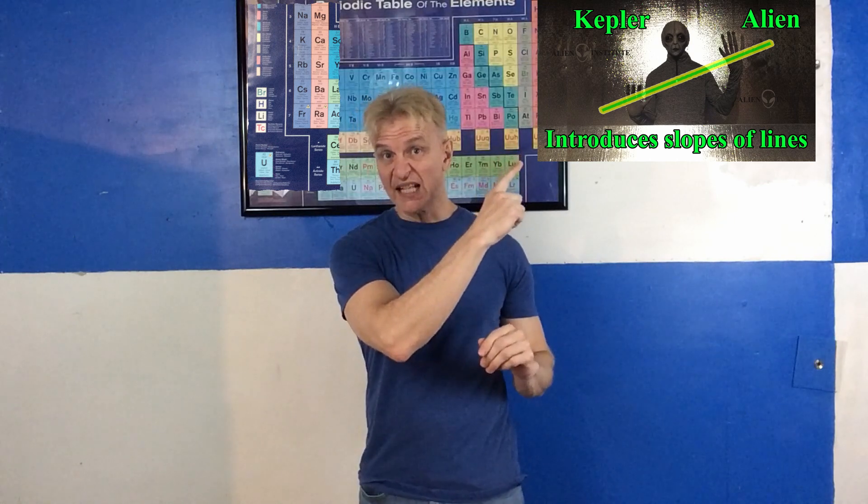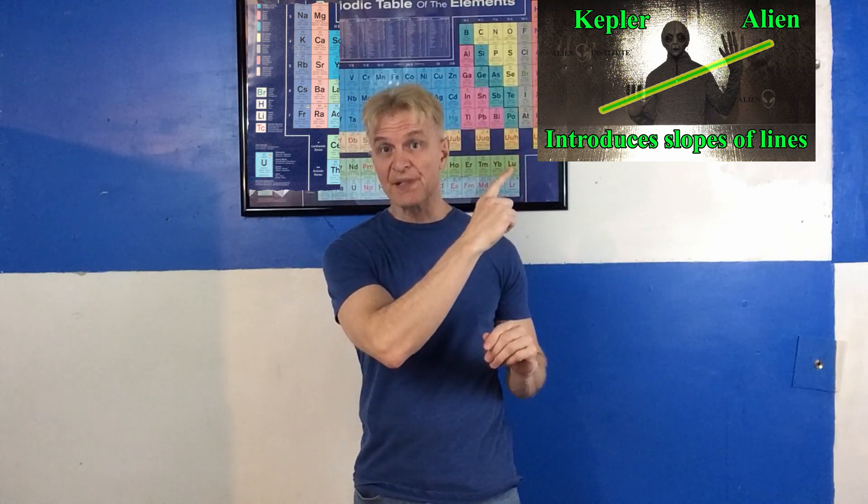If you haven't seen the video discussing the four types of lines, you may want to watch it after this video. The first thing we will agree on is that the slope of a line will be represented by the letter M. Most books represent it that way.